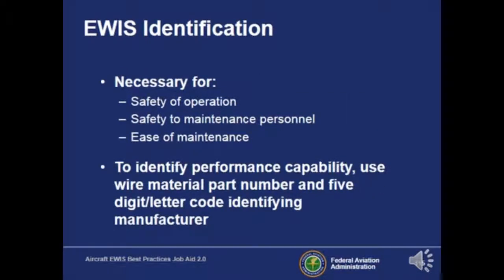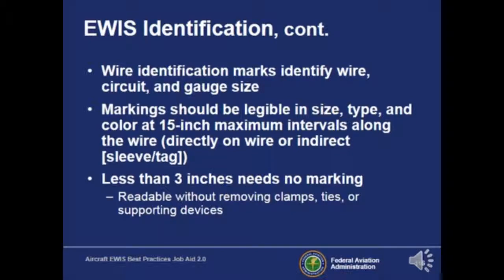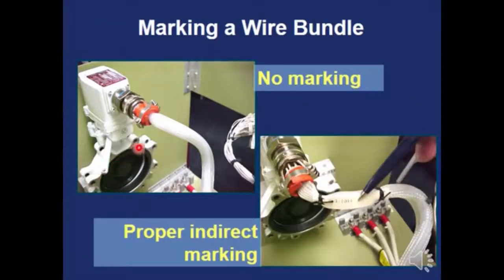It's important that each wire is properly identified — necessary for safety of operation, safety to maintenance personnel, and ease of management. You don't want to make contact with the wrong wire and potentially expose yourself to injury. When replacing wires, make sure you have properly identified the wire and check the wiring diagram. If replacing a wire less than three inches long, a specific marking isn't required, but anyone looking at the wiring diagram should be able to identify it. When replacing a wire, include the marking so everyone knows what specific wire it is.